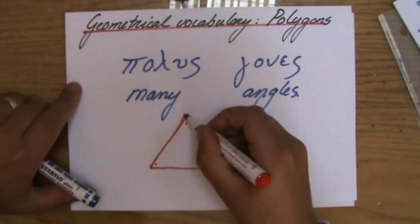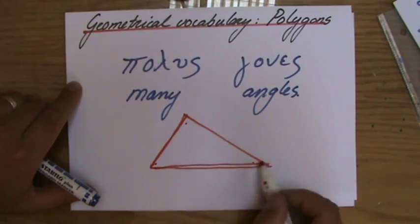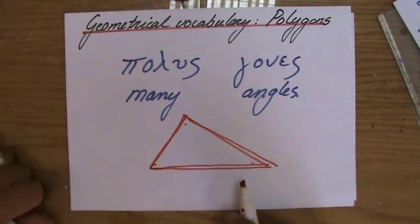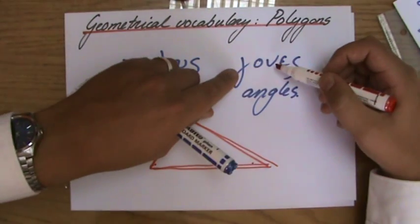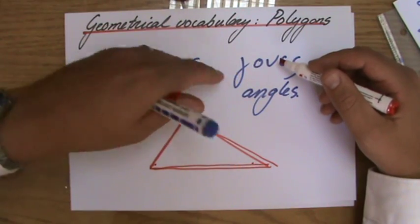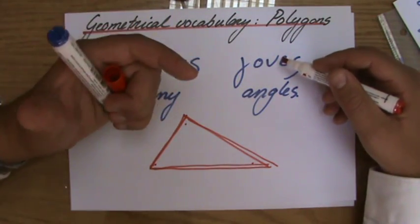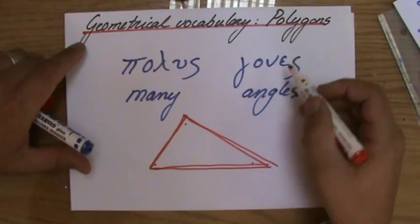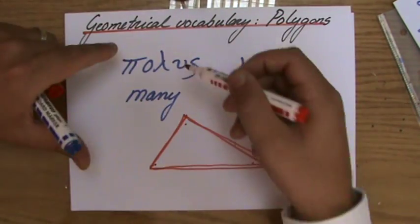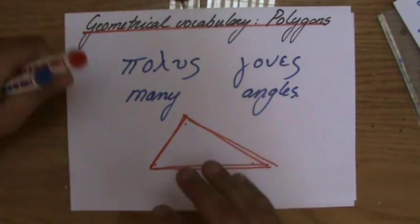All the lines connecting those angles are straight. A polygon. Gones, like diagonal, which means like through, gones, through two angles. A diagonal. So gones means like angle, polus means many. So many angles, two-dimensional.